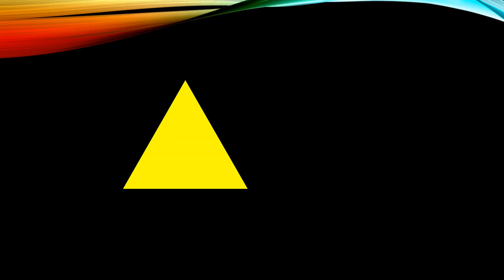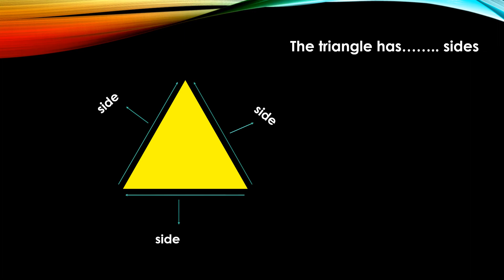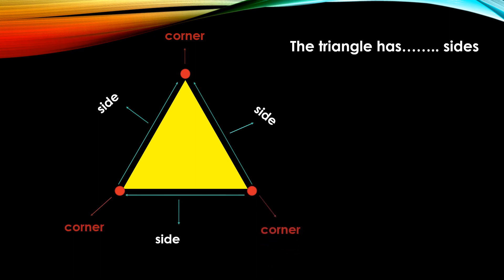Let's see the triangle. Yes, it's a triangle. What's this? It's a side. And this is a side, and this is a side. So how many sides does the triangle have? Let's count: one, two, three. The triangle has three sides. And this is a corner, and this is a corner, and this is a corner. So the triangle has three corners.